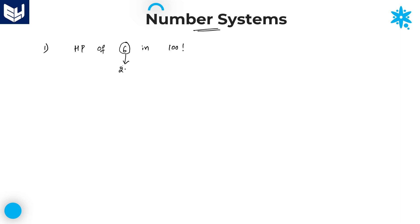How can we write 6 into prime factors? It is equal to 2 into 3. Now, here we have 2 prime numbers. We need to divide 100 with both prime numbers separately — initially with 2, after that with 3.